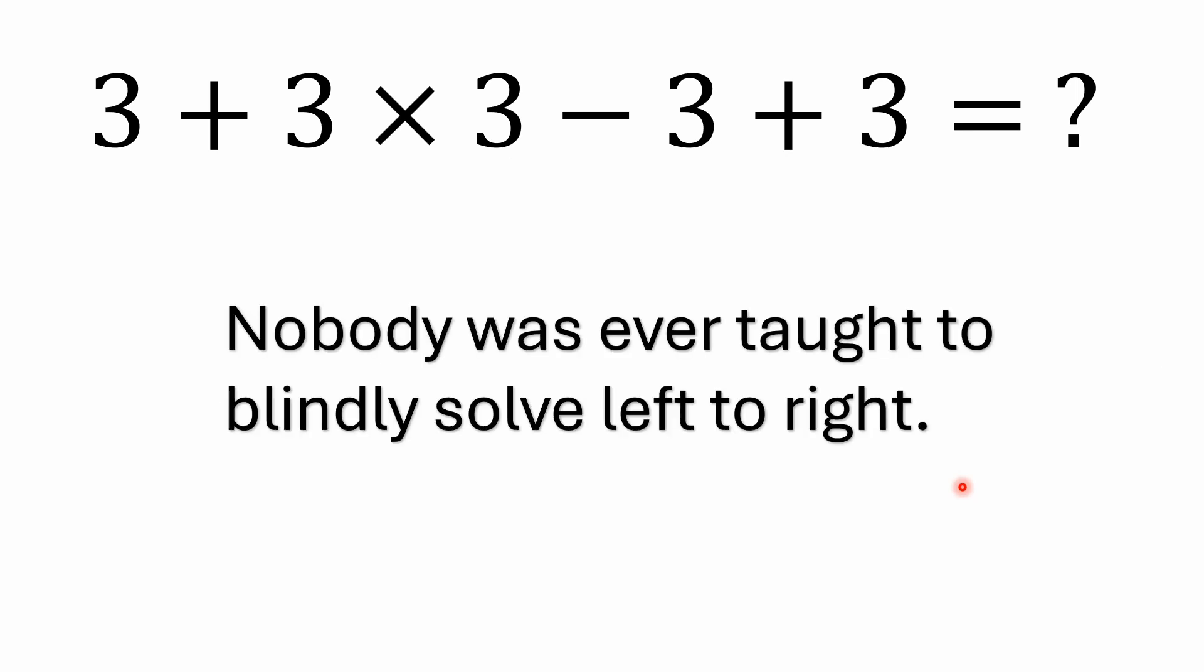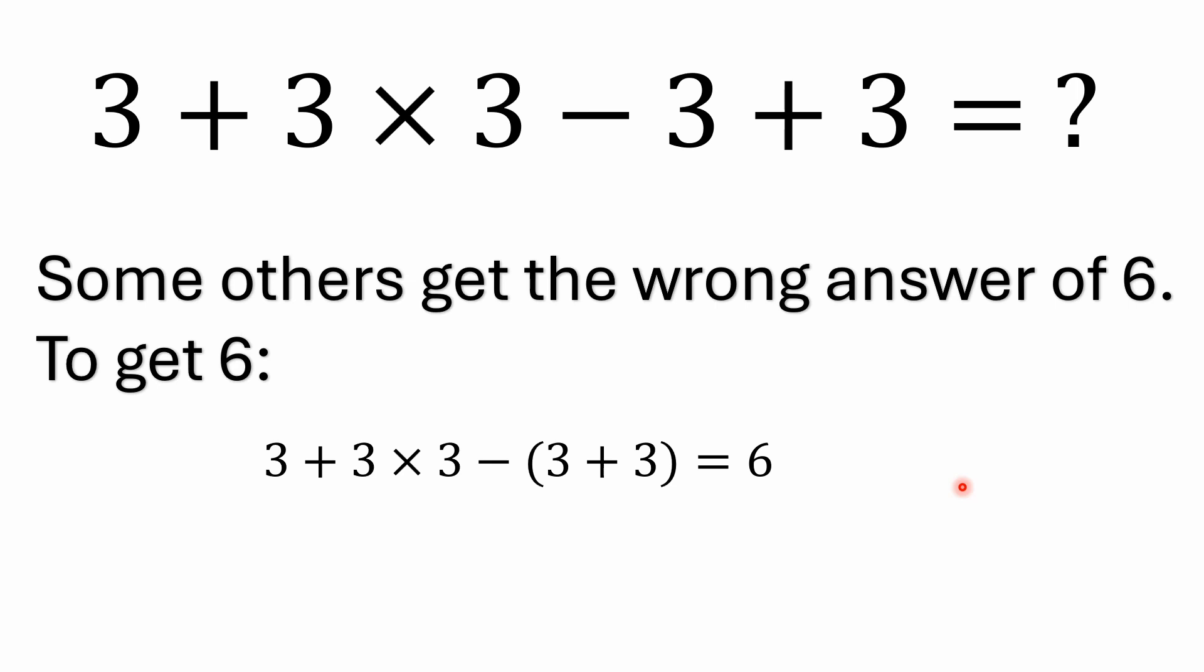Nobody was ever taught to blindly solve left to right. It's one of the most common excuses I'll hear from people. The other common answer that's wrong is six. The only way I'm figuring people are getting that is when they see this minus sign, for some reason they're wanting to subtract everything to the right of it, which you can't do. This is where some people really fail to understand how mathematical operators work. In order to get six, you would actually have to have parentheses here to make this minus sign act on the three plus three. Otherwise it's minus three plus three. This minus sign has nothing to do with this three.